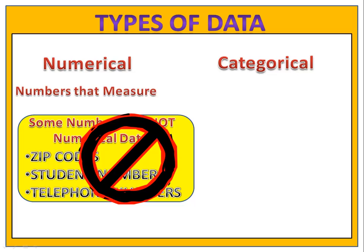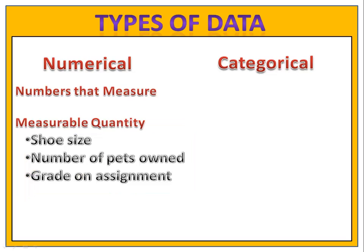So if you want to know if a set of numbers is numerical data and you're really not sure, here's the question you should ask yourself: could you find the average of it? If you can find the average of something — say the average number of pets owned, or the average shoe size — then it is numerical.